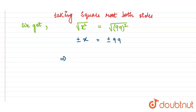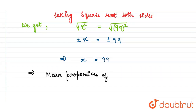Since both 81 and 121 are positive, we take the positive value, and x becomes 99. So the mean proportion of 81 and 121 is equal to 99. And this is our answer.